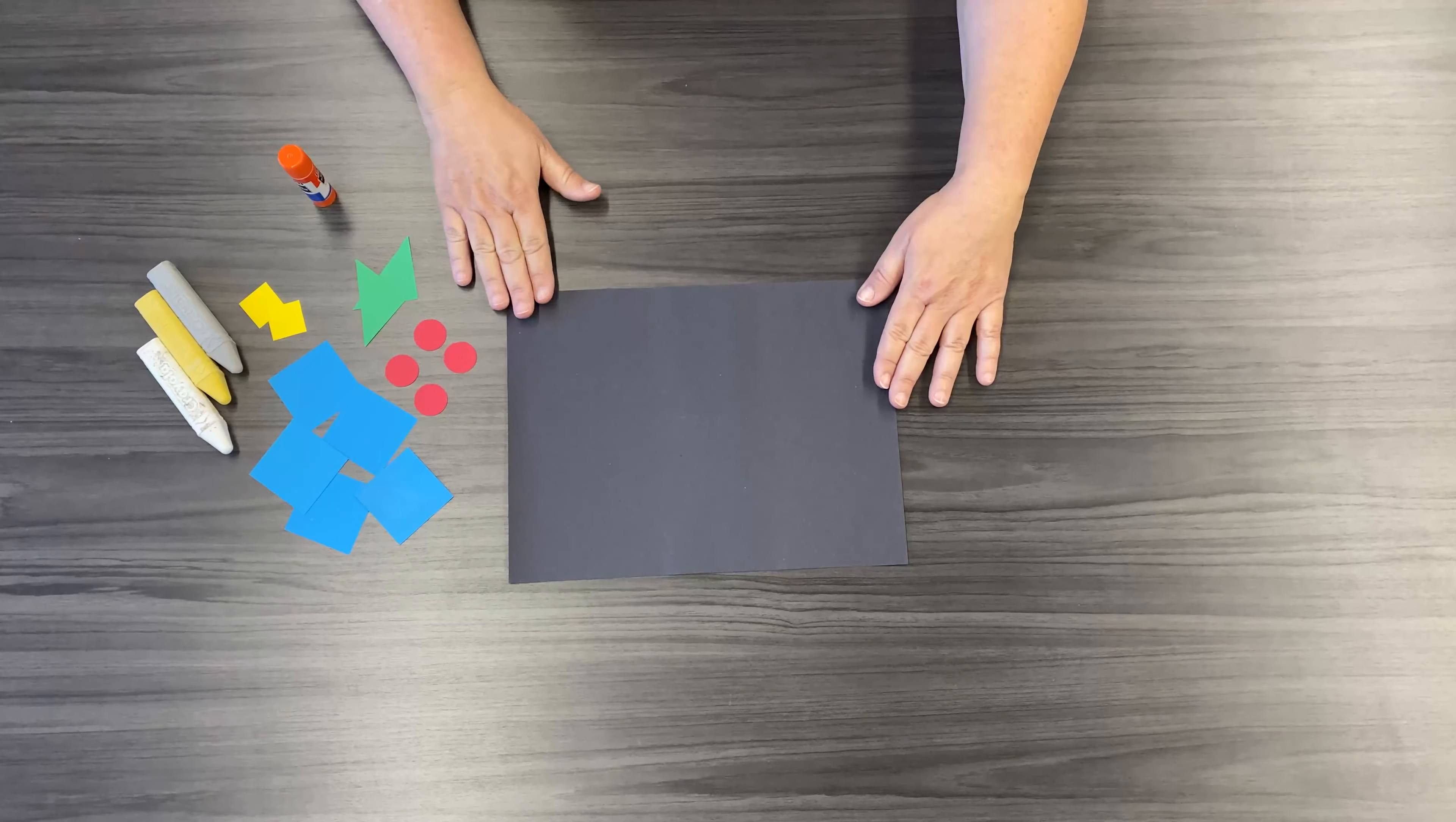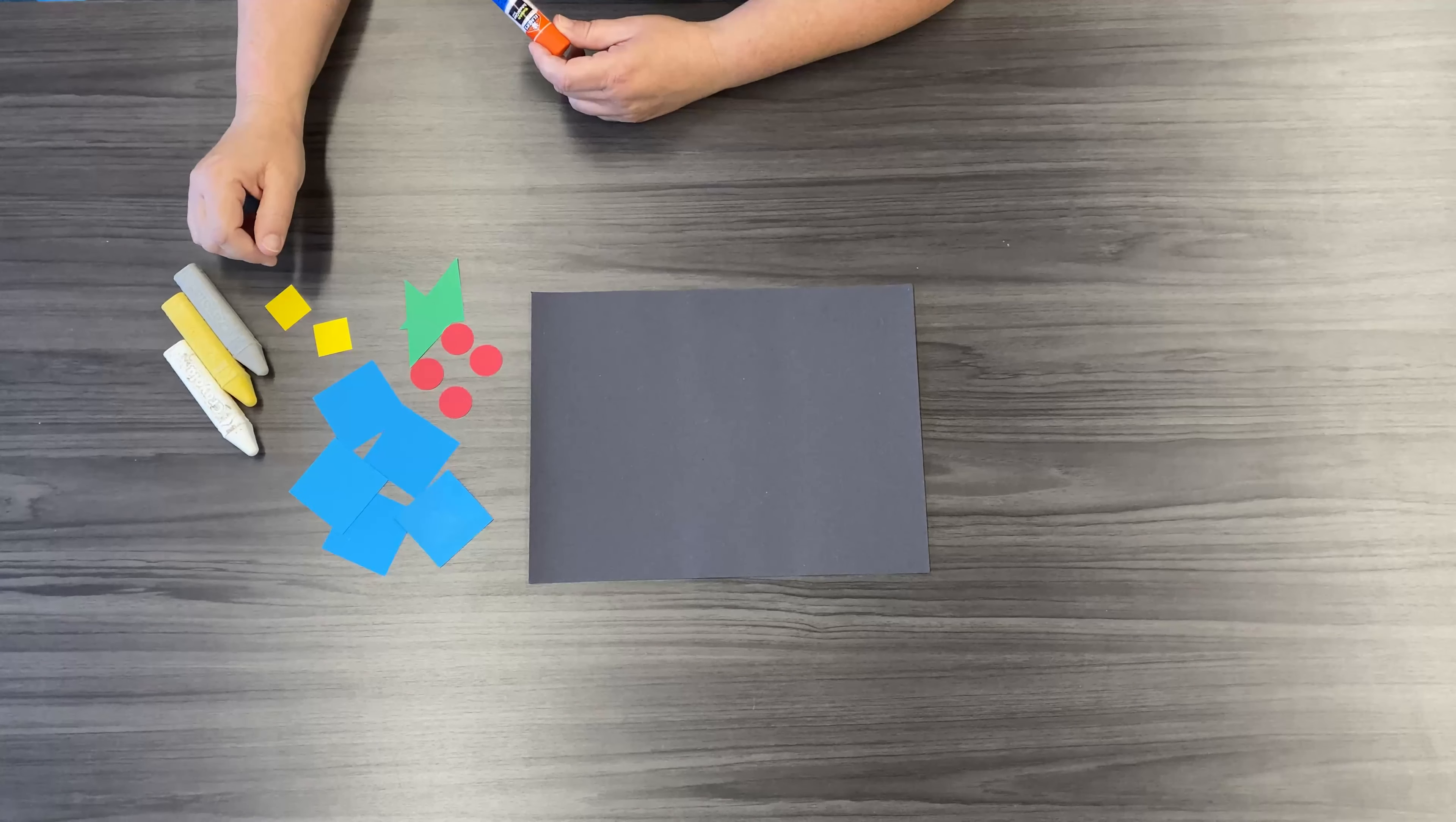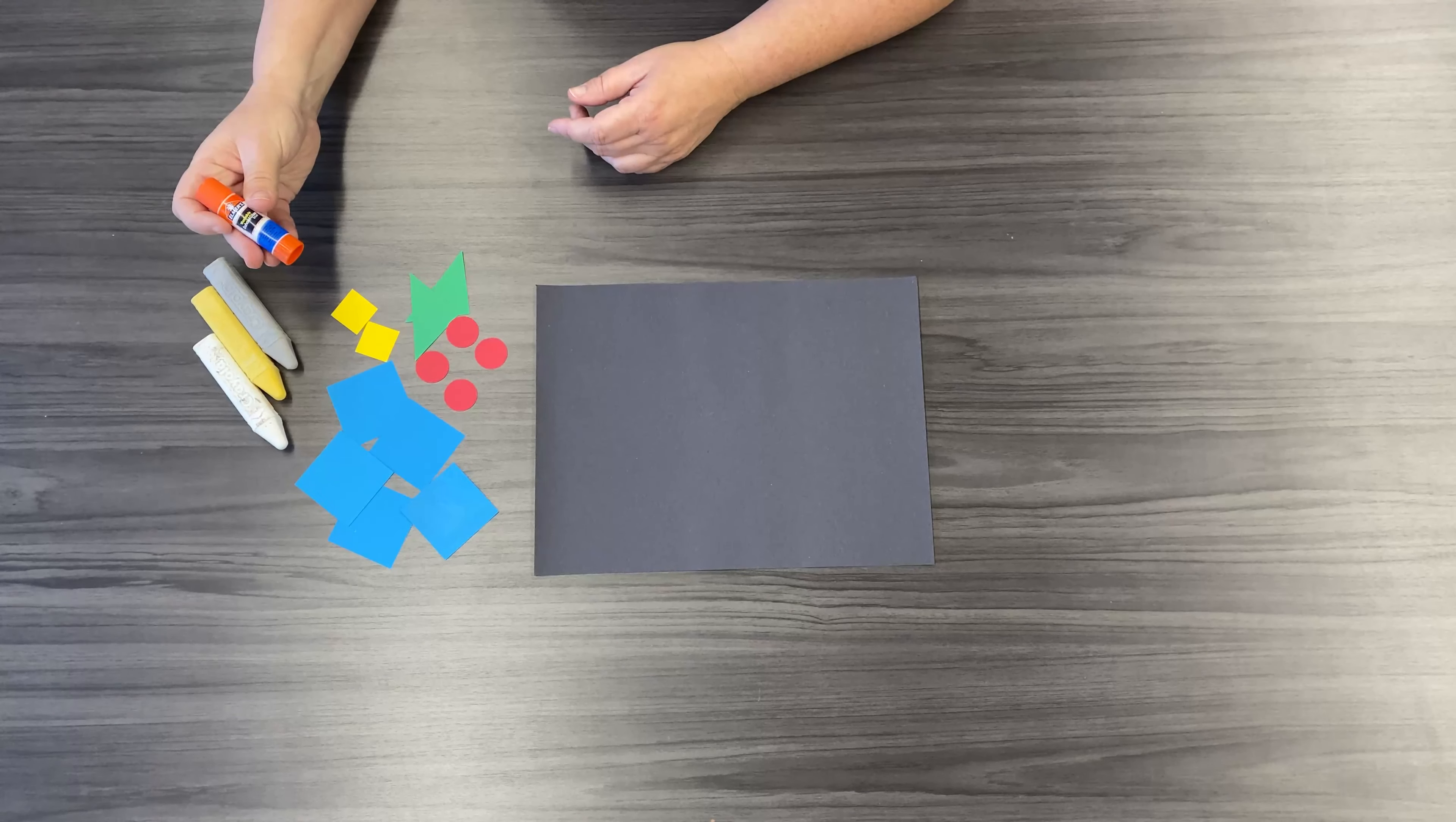Okay, so first you want to start with your black construction paper. Lay out your shapes so it's ready. You'll also need chalk and you'll need a glue stick.